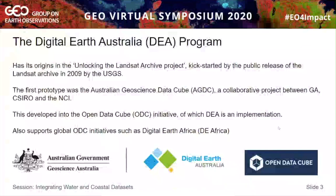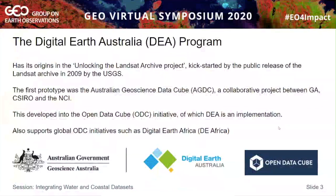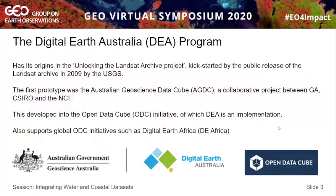Digital Earth Australia really kicked off when the USGS released publicly available Landsat data back in 2009. The first prototype was called the Australian Geoscience Data Cube, a collaborative project within Australia, which developed into the Open Data Cube initiative. Digital Earth Australia is the Australian government implementation of the ODC. We also support other global ODC initiatives such as Digital Earth Africa, which we'll talk about a little bit later.